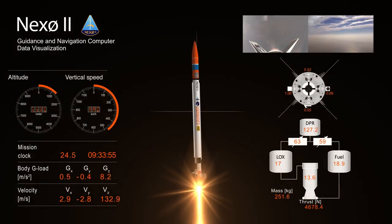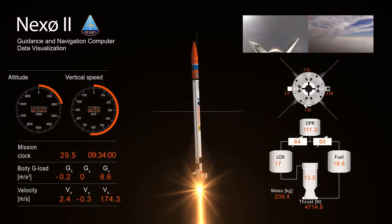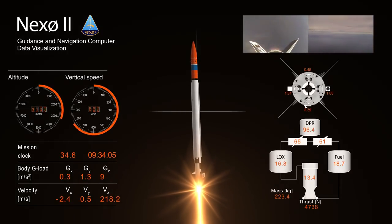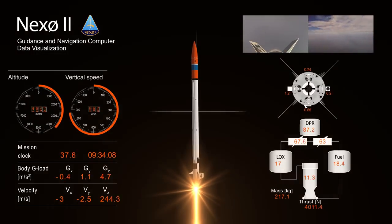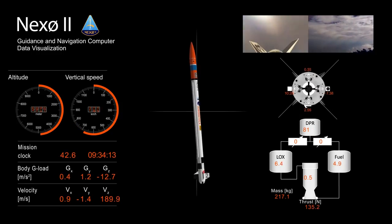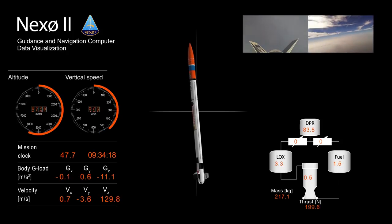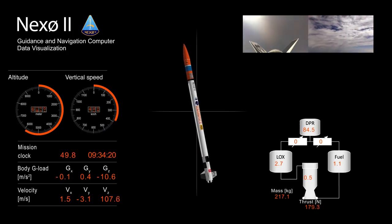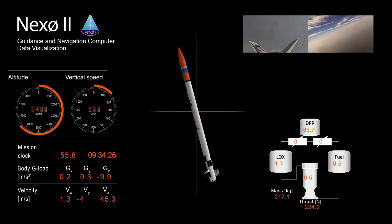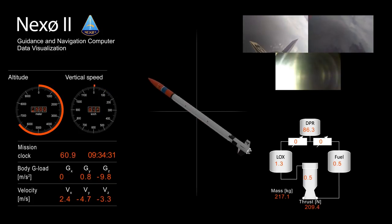1,000 meters. 2,000 meters. 3,000 meters. 4,000 meters. 5,000 meters. We have main engine cutoff. 6,000 meters. Zero velocity. Apogee.